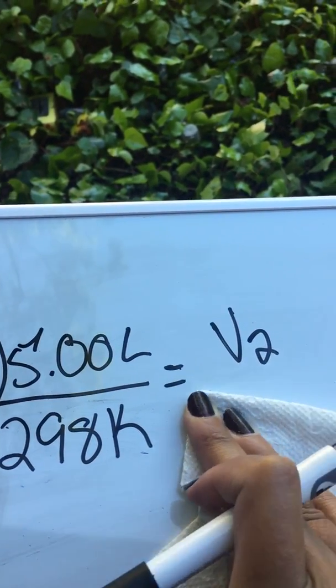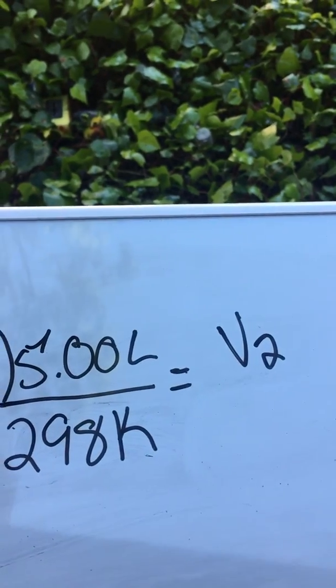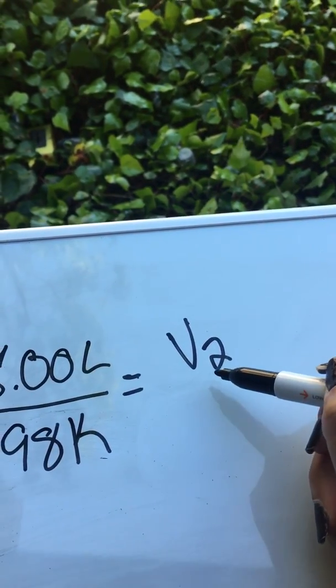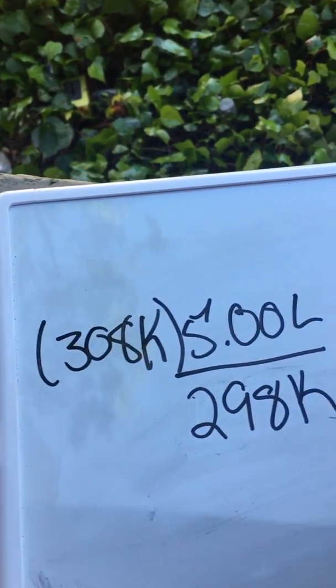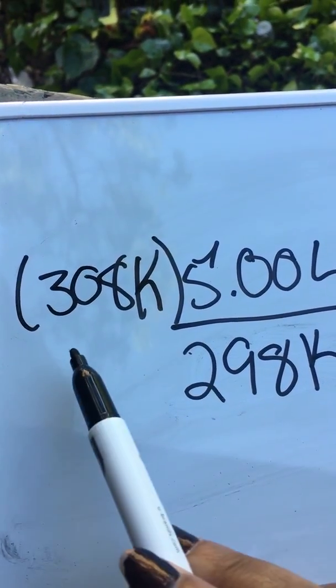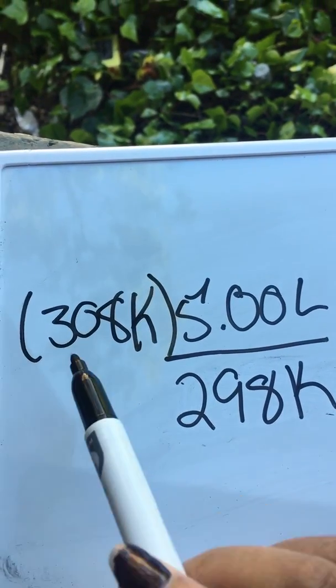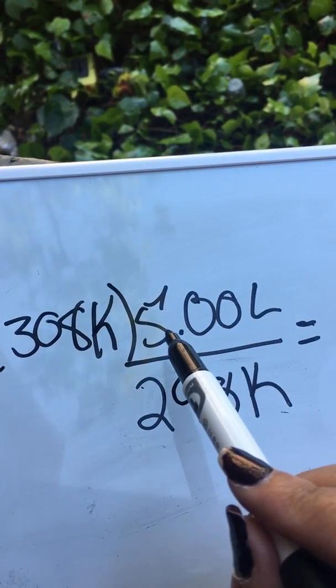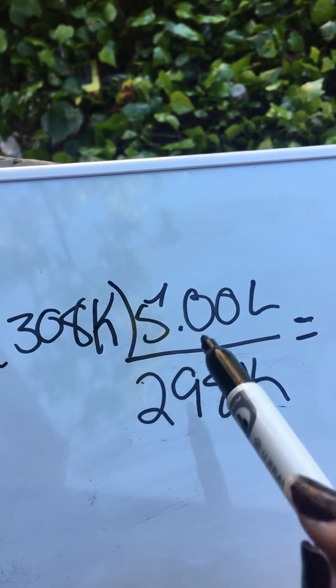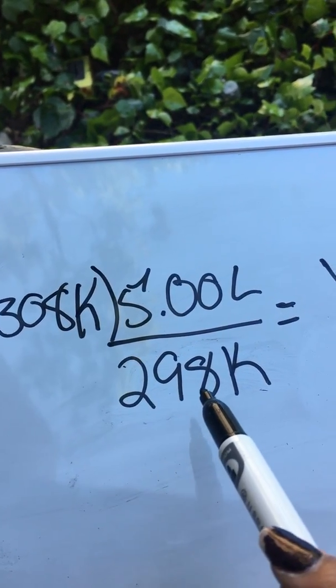So you don't need that anymore and we have succeeded in having the volume that we're looking for by itself. So this is what you're going to be left with, and you are going to multiply 308 Kelvin by 5 liters and then you are going to divide that by 298 Kelvin.